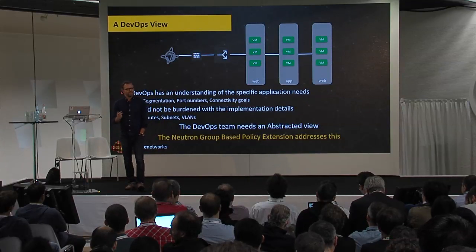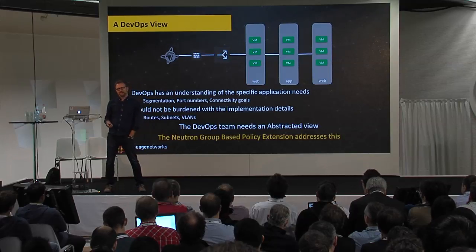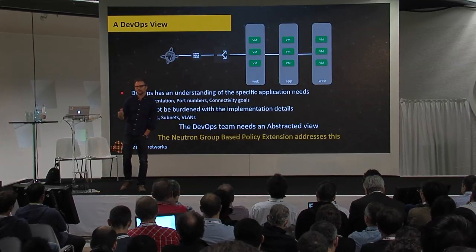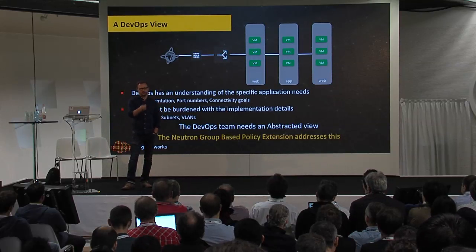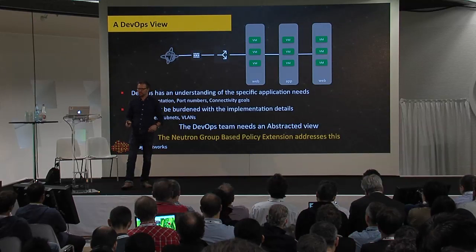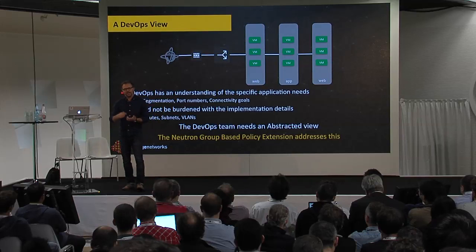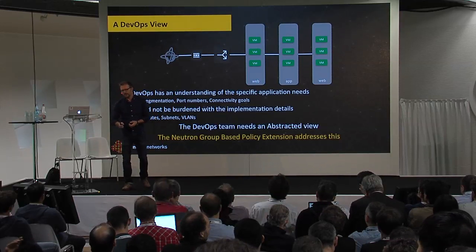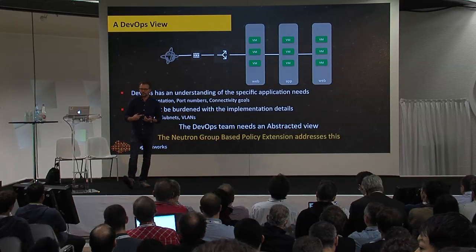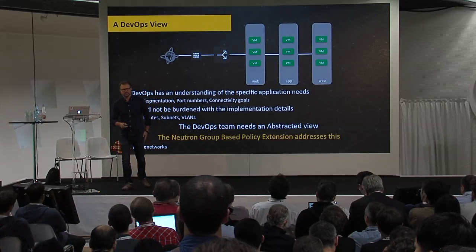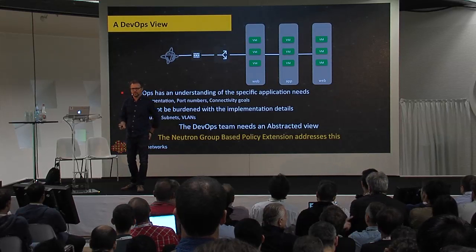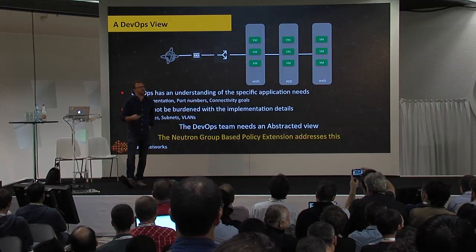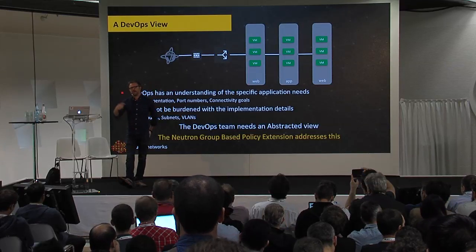What DevOps people are good at is understanding their applications and how they need to be grouped together and how they need to talk to each other. They don't care if I use a VLAN or a subnet or a router or a firewall. They know their web servers, app servers, and database servers need to be in different segments with some connectivity model and security policy between them. The DevOps team needs a simpler, more abstracted view, and the Neutron group-based policy extension is intended to address this.